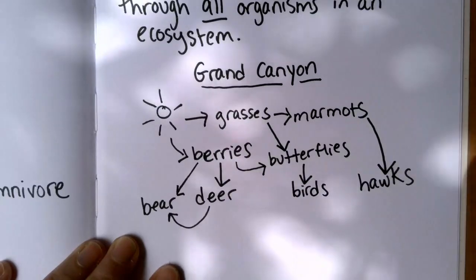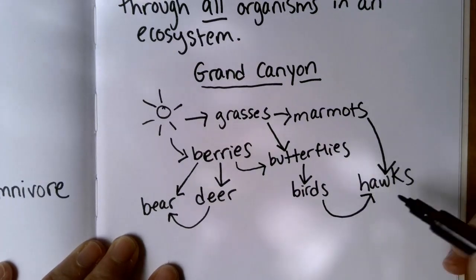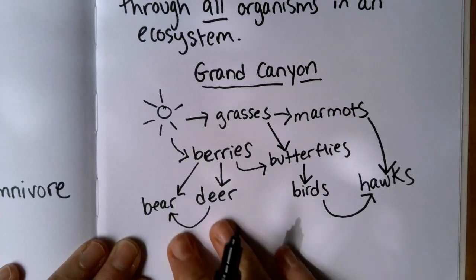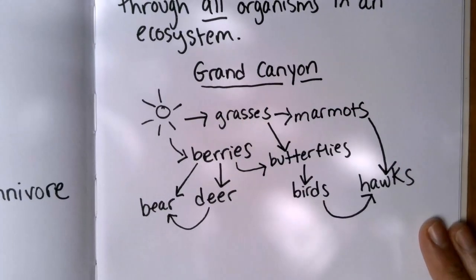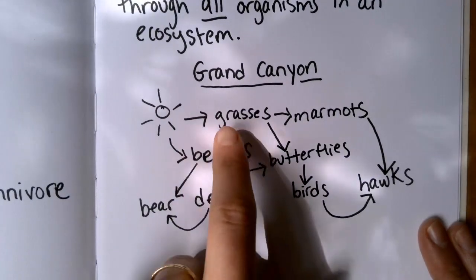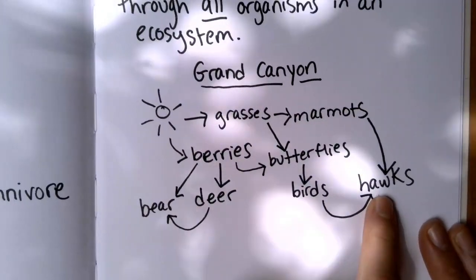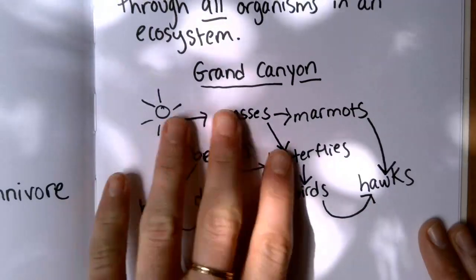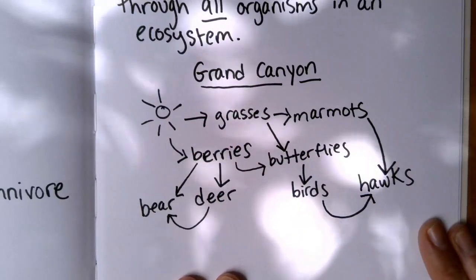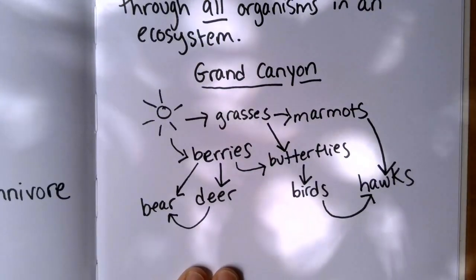So this is showing a much more real representation of what animals actually eat, right? We don't just have one producer, one consumer, and then another consumer here like in our food chain. We're showing how nature is complicated, right? As humans, we don't just eat avocados all day. We eat lots of different things. And this food web is showing you how in nature consumers eat lots of different things.